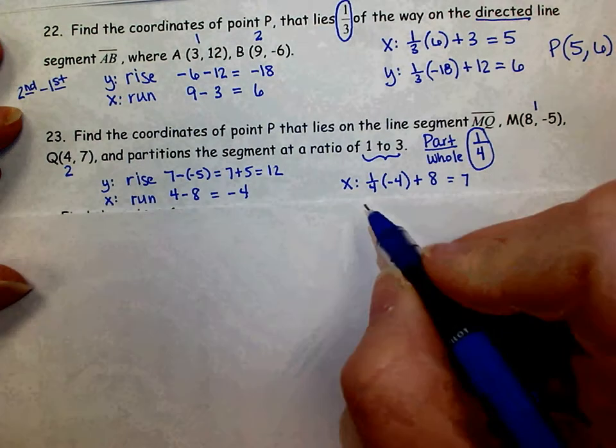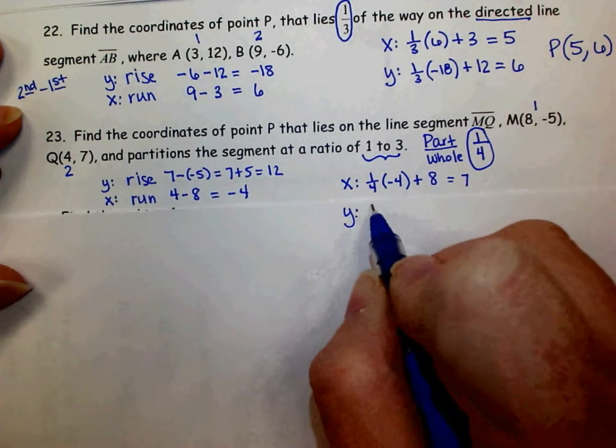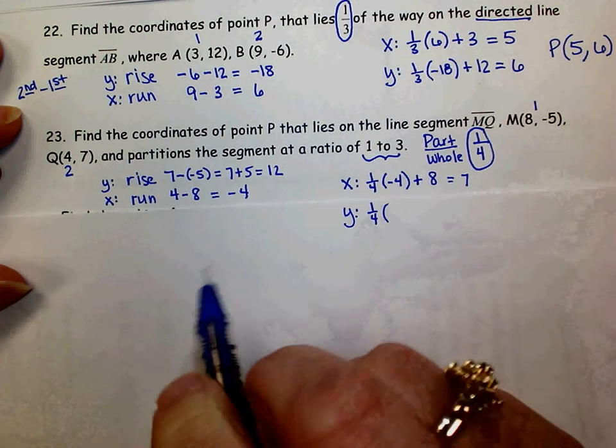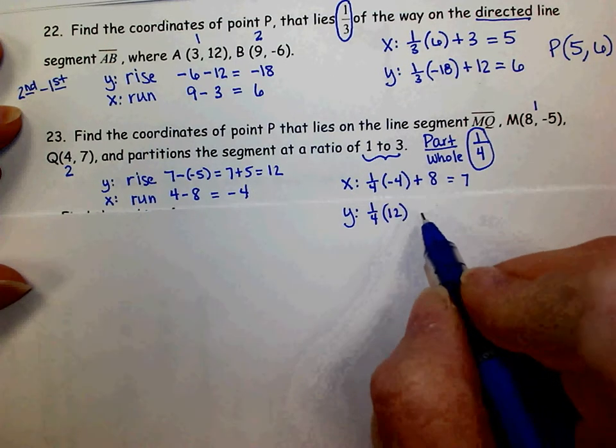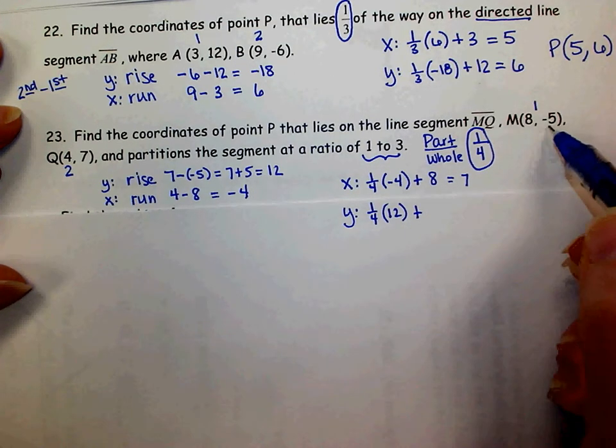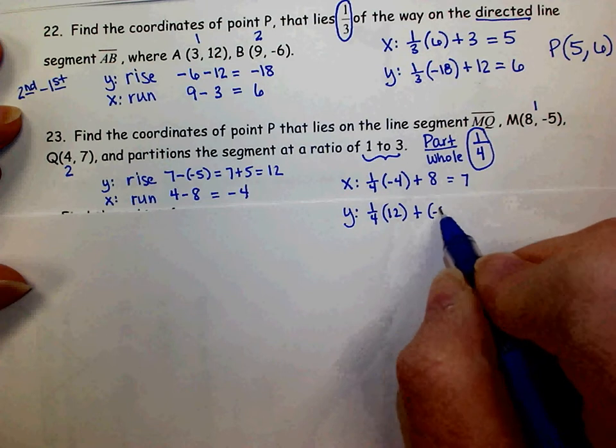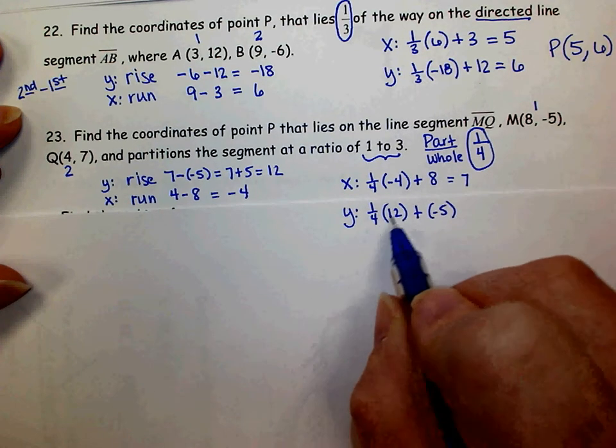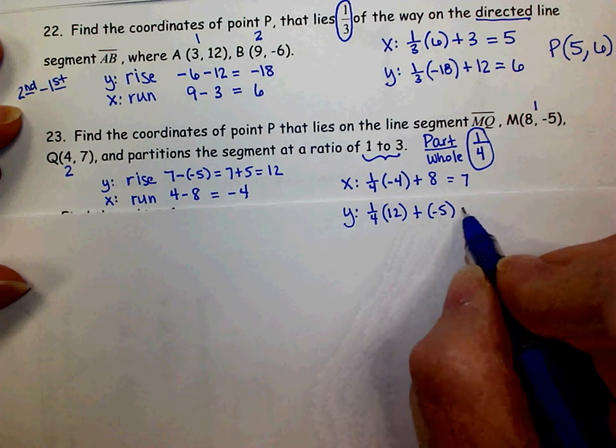To find my y-coordinate, I want a fourth of the rise. So a fourth of the 12. That's how far I'm going from my original point, whose y is negative 5. So a fourth of 12 is 3. 3 plus negative 5 is negative 2.